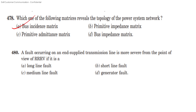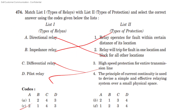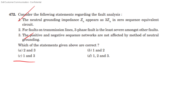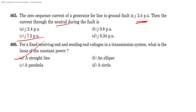Last question: Fault occurring at the end supply of a transmission line is more severe from the point of view of RRRV — it is a short line fault. We have to include the PSC point of view in the questions, include the correct update, and learn more about the questions. Thank you.